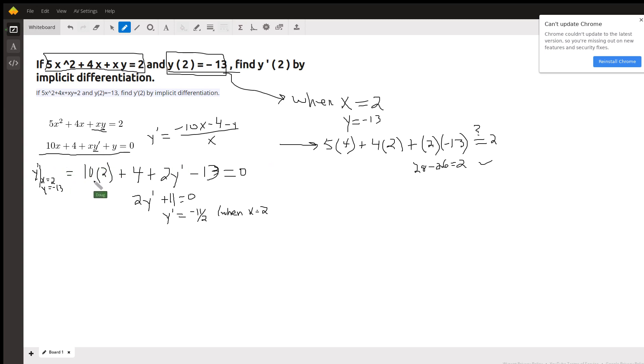But since we're evaluating y prime when x is 2 and y is 13, we can substitute right now if you want to. So put in a 2 for x, a 2 for x, there's y prime and a minus 13 for y, and then solve for y prime, and we get negative 11 halves. That's the case when x equals 2 and y equals negative 13.